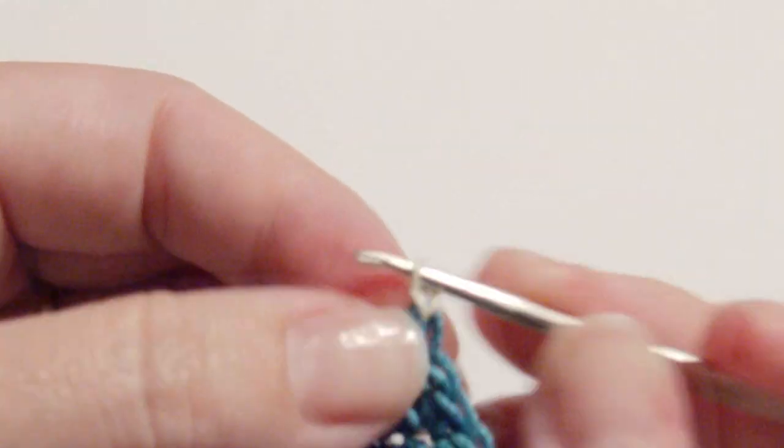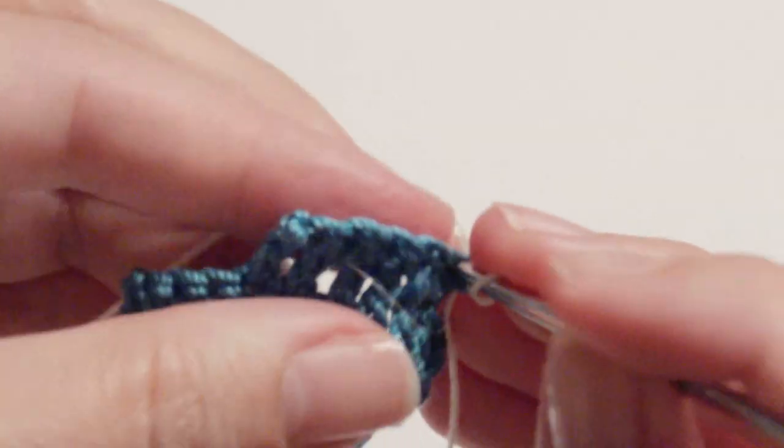Now add a new color and chain one and work one single crochet in the next five stitches.